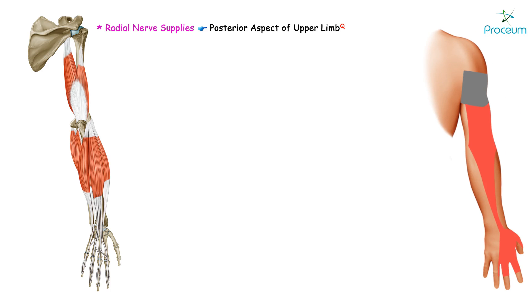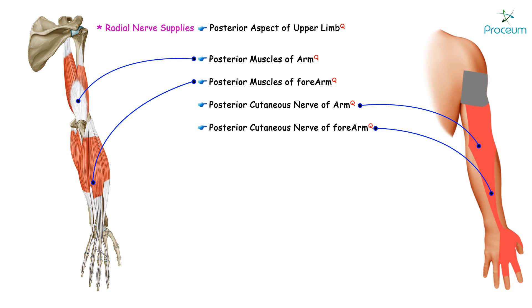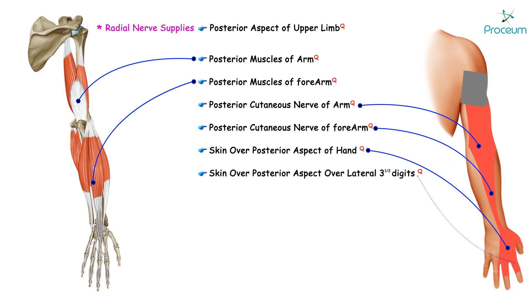The radial nerve supplies almost everything on the posterior aspect of the upper limb: the posterior muscles of the arm, posterior muscles of the forearm, posterior cutaneous nerve of arm, posterior cutaneous nerve of forearm, and skin over the posterior aspect of the hand and the posterior aspect of the lateral three and a half digits. All posterior things are supplied by the radial nerve. Associate the word 'posterior' and the letter P with the radial nerve.